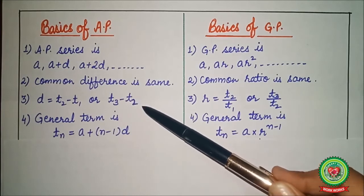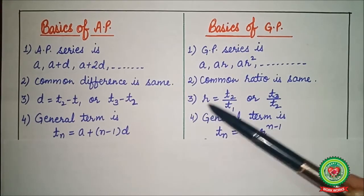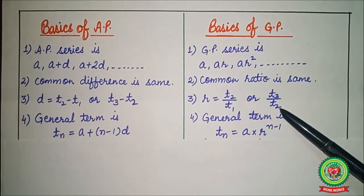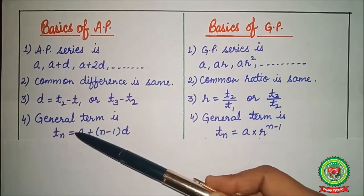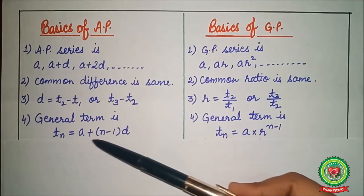Now common difference can be calculated second term minus first term or third term minus second term. In GP, common ratio is second term divided by first term or third term divided by second term.